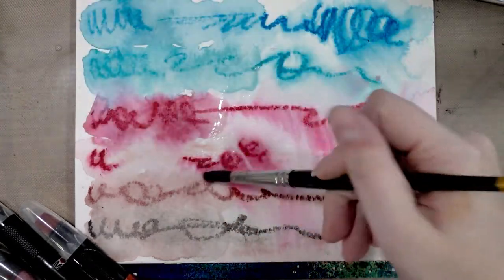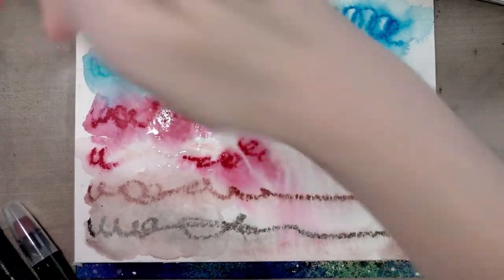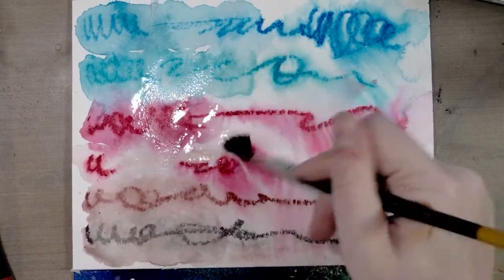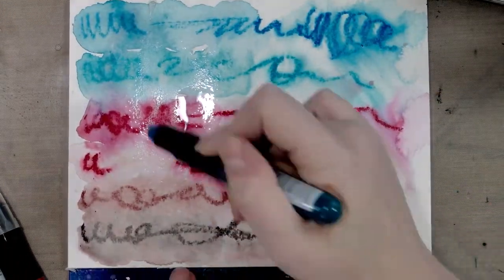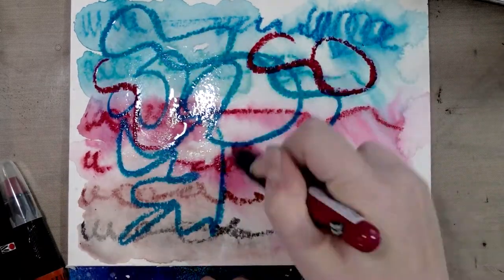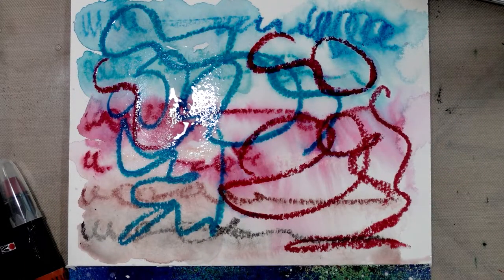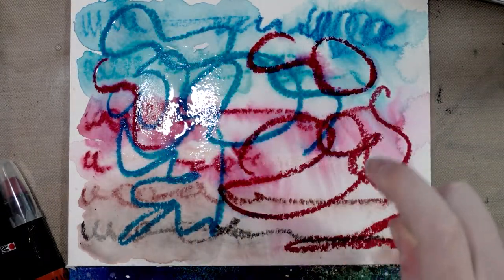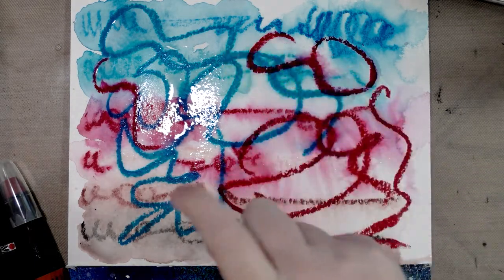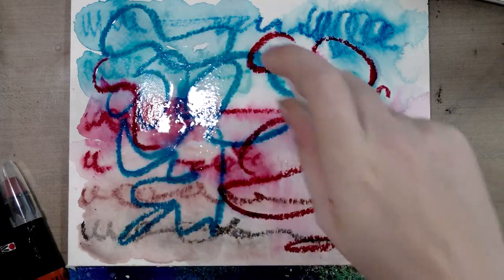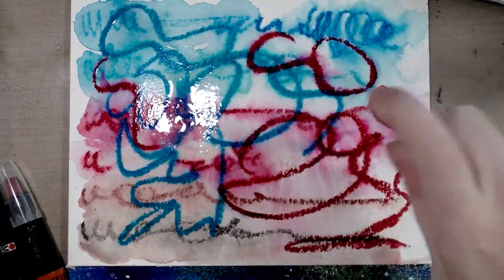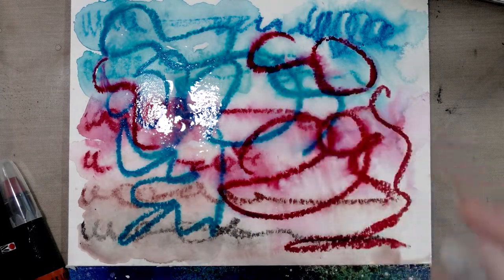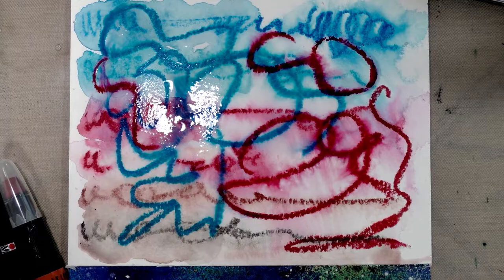Since we've already sort of started working on this page, why don't we do some wet into wet scribbles. When you're doing wet into wet even if the paper is really saturated with these, there isn't necessarily a whole lot of movement. If you spritz them I think the force of the water sort of pushes them a little bit, but there's still not too much bleeding or too much movement.